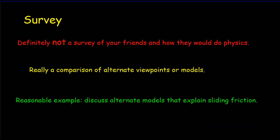A survey was definitely not a survey of your friends to ask how they would do physics. It's a comparison of alternative viewpoints or models. So you're looking at literature. A reasonable example might be to discuss alternate models that explain sliding friction. But some of those models get quite difficult and might be beyond your scope.